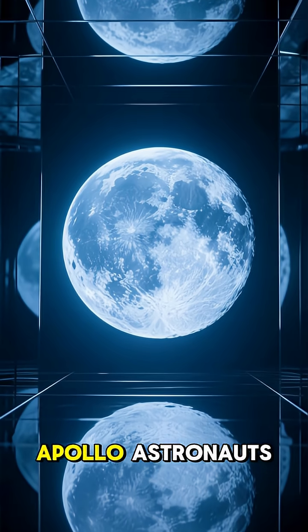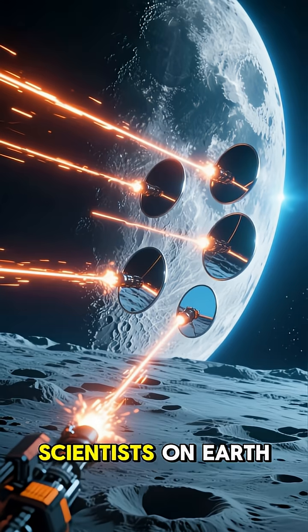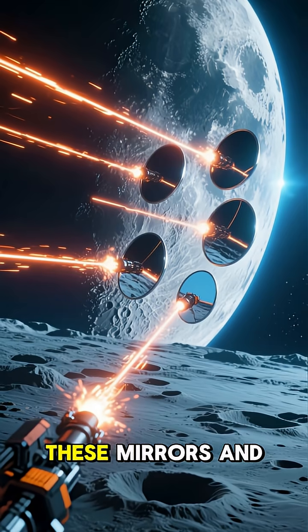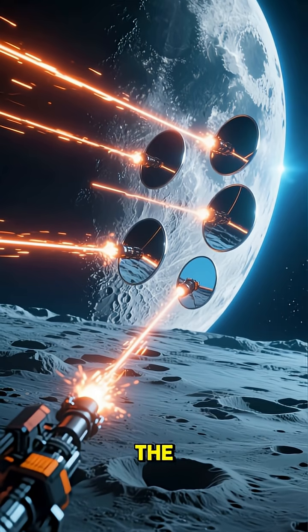Apollo astronauts left special mirrors on the moon's surface. Scientists on Earth shoot lasers at these mirrors and measure the time it takes for the light to bounce back.